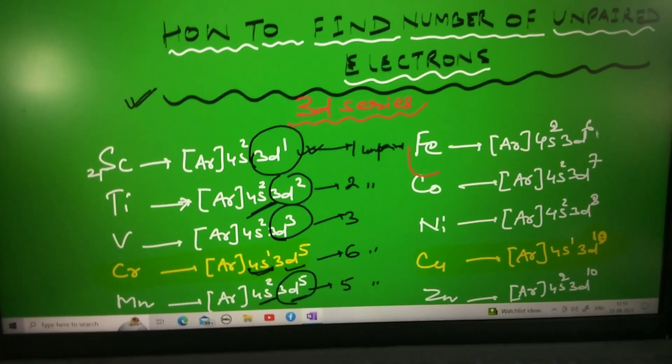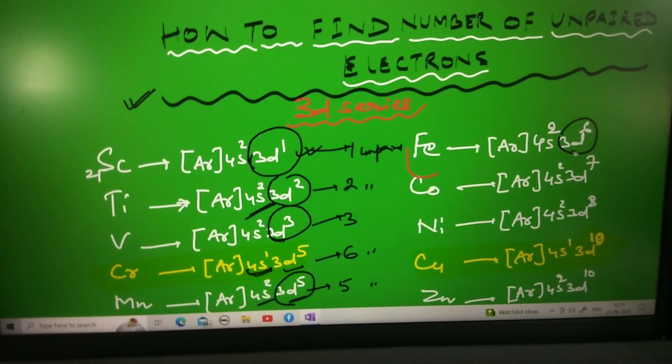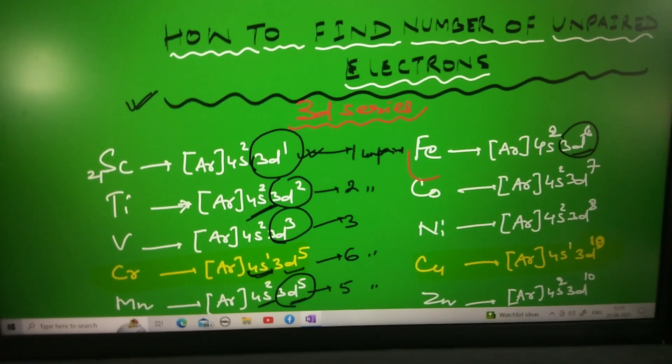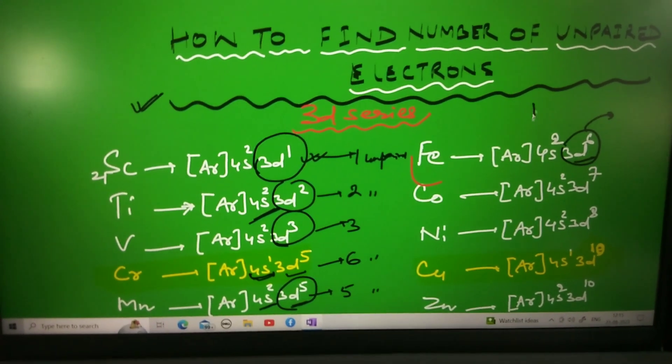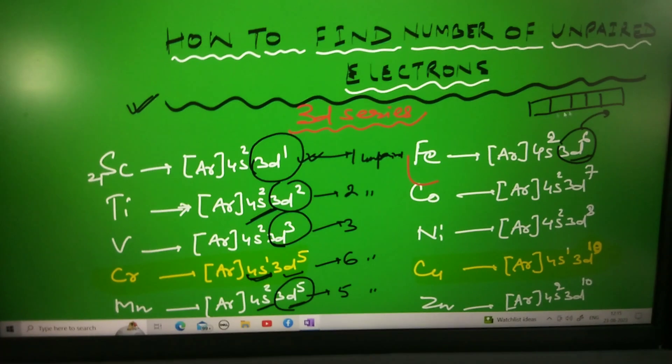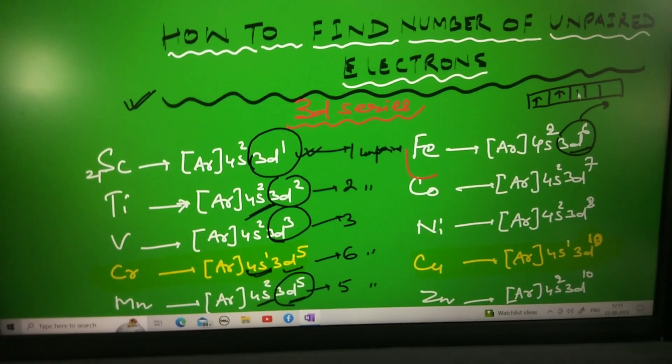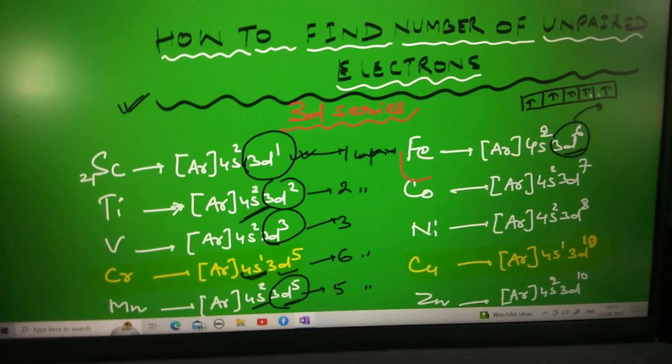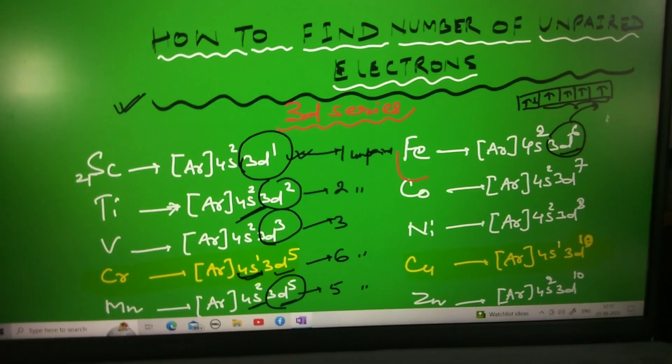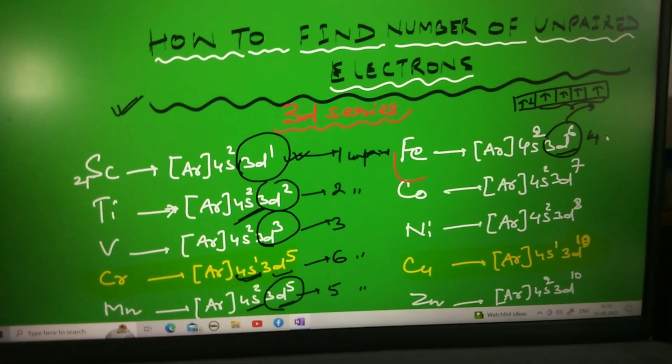Let's see iron. Iron has 3D6 electrons. 3D6 doesn't mean it has 6 unpaired - it has 4 unpaired electrons. If you see, there are 5 orbitals in D subshell. So 1st electron, 2nd, 3rd, 4th, 5th, 6th - these are only 4 unpaired. So in iron there are 4 unpaired electrons.